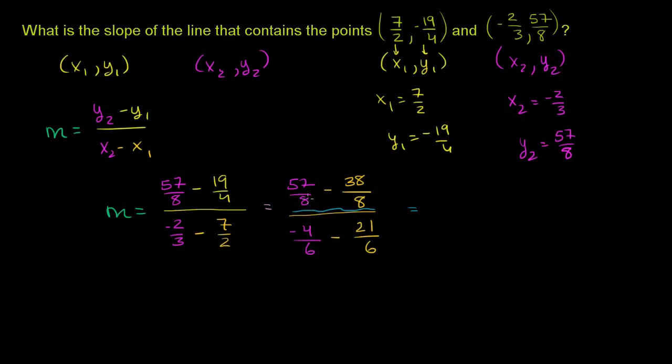And so now I can simplify. This numerator right over here is going to be equal to... 57 minus 37 would be 20. So this is going to be 1 less than that because I'm subtracting 38. So this is going to be positive 19. 19/8 over, I'll do this in pink.